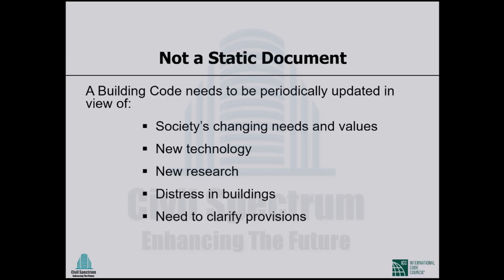New technology is another driver — we are finding better and better ways of doing things that need to be implemented in building codes. New research around the world may show improved ways of doing things. Distress in buildings, when it can be traced directly to a deficiency in building codes, requires us to fix that. All of these make a case for regular updates to building codes.